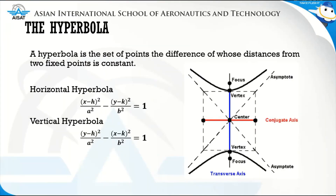Let's start with the definition of hyperbola. A hyperbola is the set of points where the difference of whose distances from two fixed points is constant. These two fixed points we refer to as foci. Let's say we choose a point P sub 1. The distance of P sub 1 from the first focus is D sub 1, and the distance of P sub 1 going to the second focus is D sub 2. We choose another point P sub 2. The distance of P sub 2 from the first focus is D sub 3, and the distance of the second point from the second focus is D sub 4.